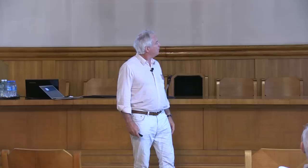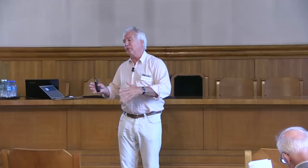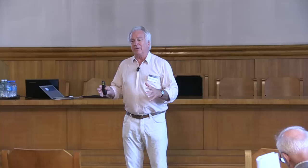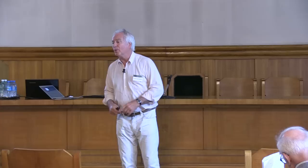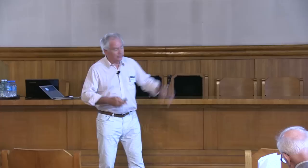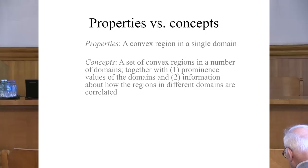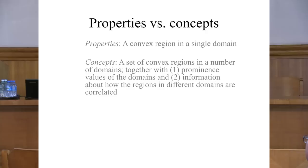The assumption that properties and concepts are built on convex regions is very important for learning principles. I made a prediction that in every language, each color word corresponds to a convex region. Different languages carve up color space differently — some have very few color words, some have lots. But I predicted that in every language, each color word corresponds to a convex region. At that time I didn't have much evidence. But then a German linguist, Gerhard Jäger, went through 110 languages for which color data exists and found very strong support for this idea. And the concept is not just a convex region — some domains are more important than others. If you're looking at a dog, the shape is much more important than its smell in determining whether something is a dog. Then the regions are correlated in different ways.